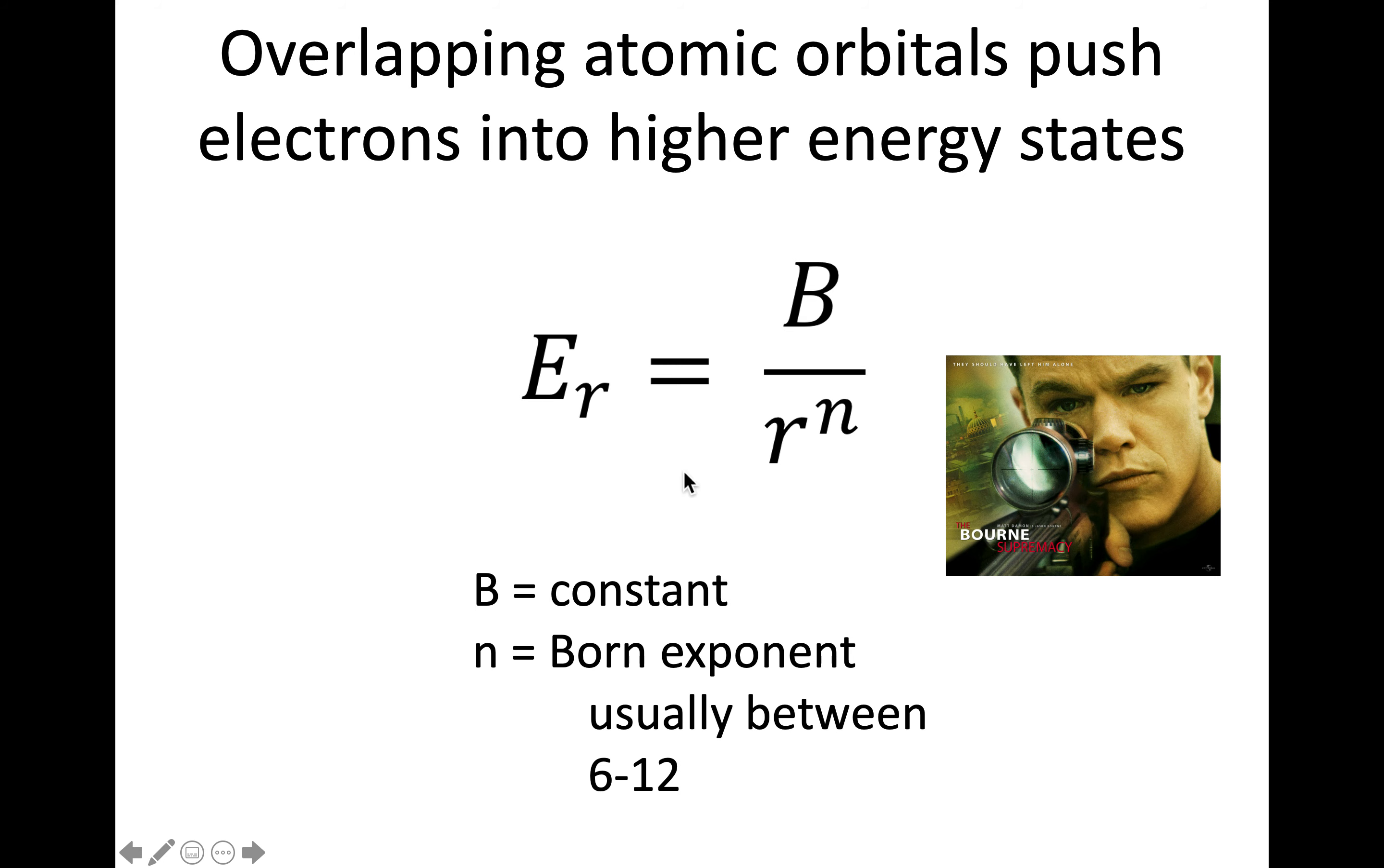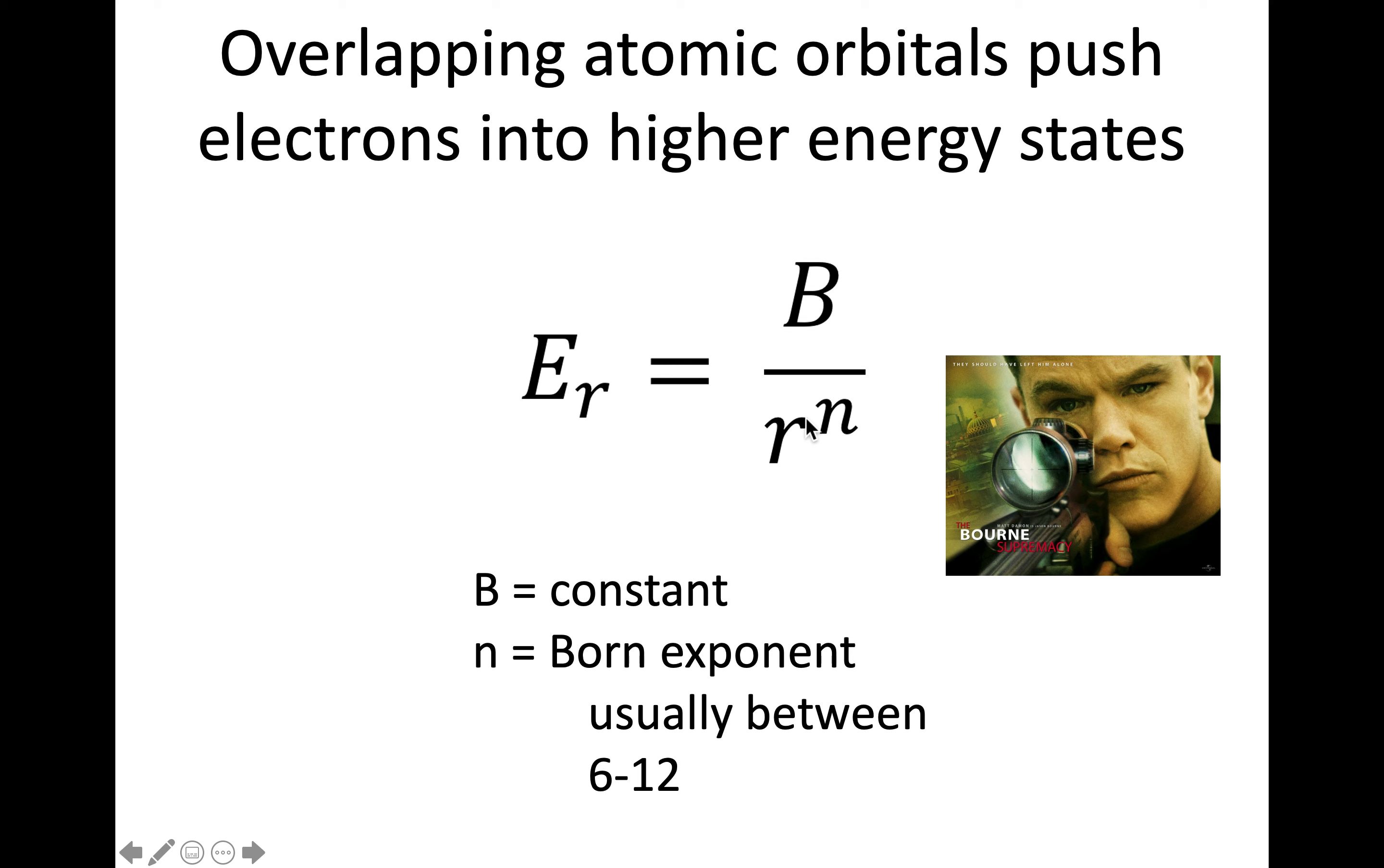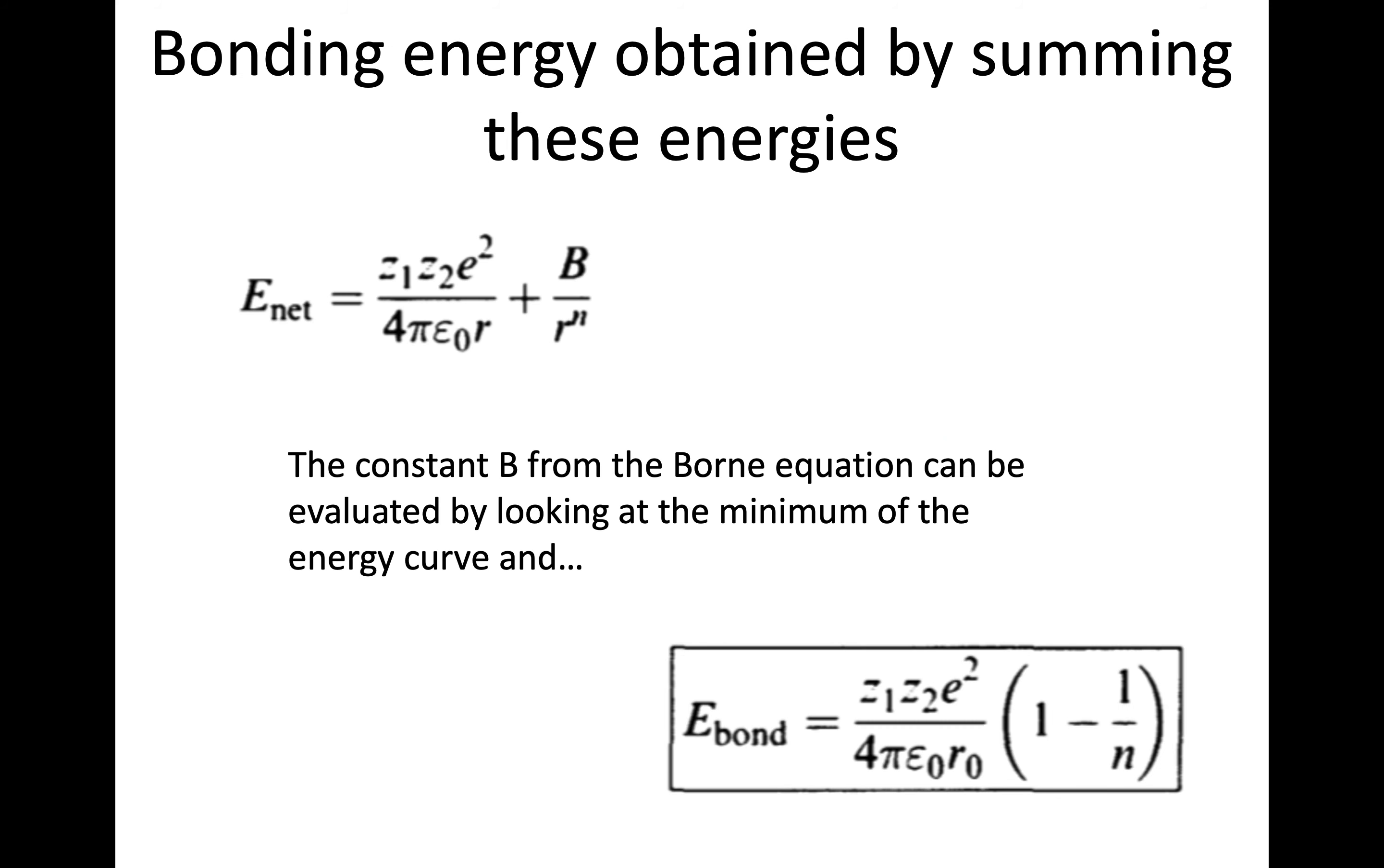And so we can cover that by what we call the Born equation. So that's my little Born, Born identity joke here. So this is R for repulsive. And again, it's energy, so it's E. And here we have a constant B over the radius to what's called the Born exponent. And this is between 6 and 12. So you see, this is much greater than what we had here on the bottom for R. So this is much more drastic as it gets closer, because those repulsive forces, the overlap, is very strong as they get closer and closer together.